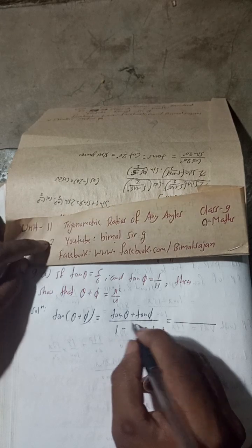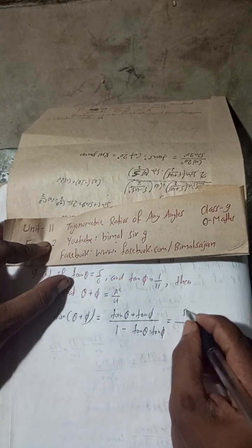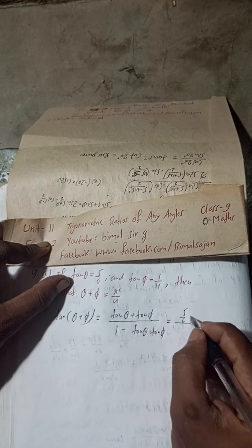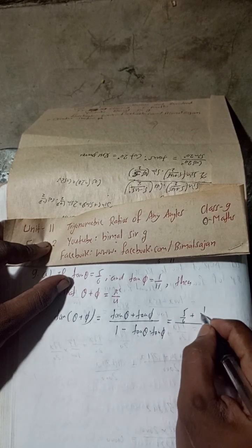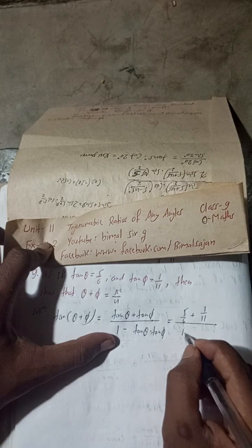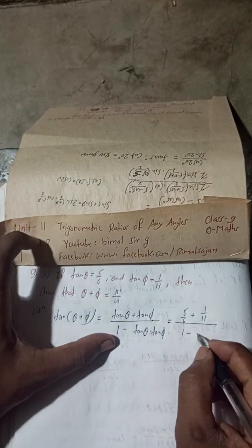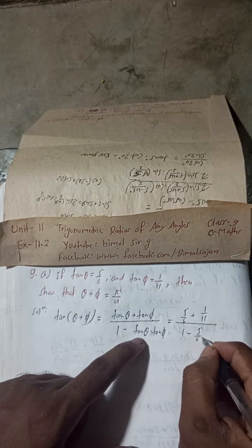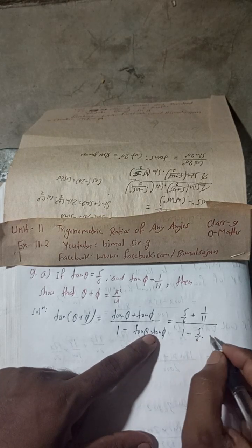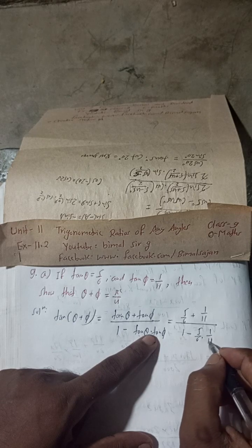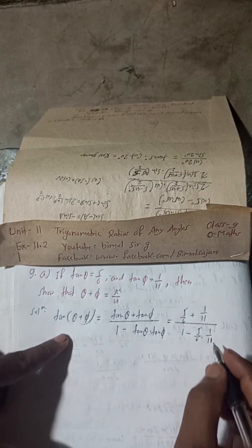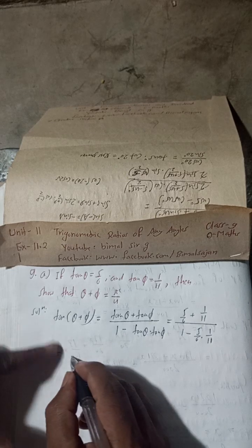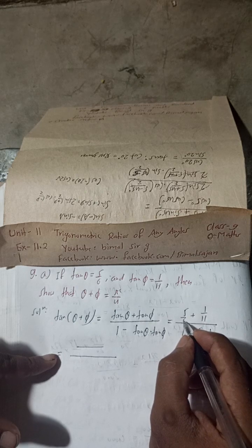Substituting the values: tan θ is 5/6 and tan φ is 1/11, so the numerator is 5/6 plus 1/11, and the denominator is 1 minus 5/6 into 1/11, which is 1 minus 5/66.